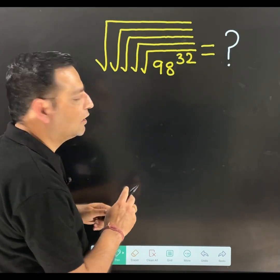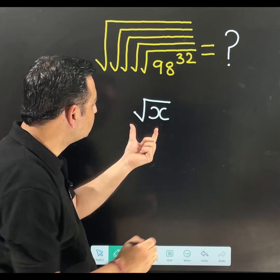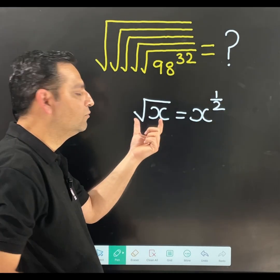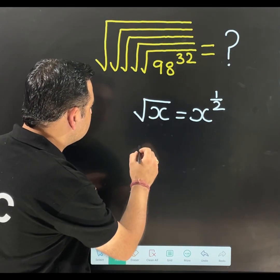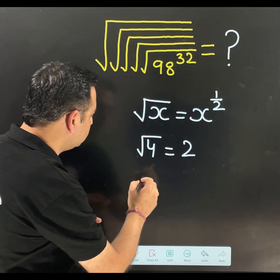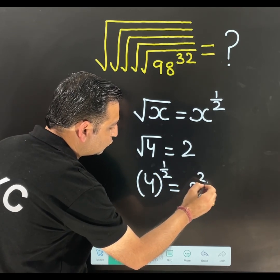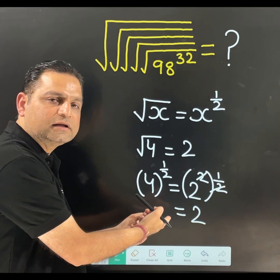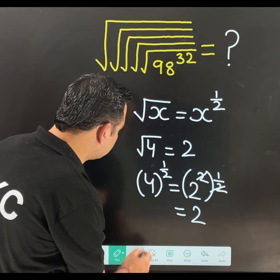First of all I would like to clarify: if you have the square root of x, you should know that this can be written as x to the power 1 over 2. Both are equally the same, there is no difference. For example, the square root of 4 is 2. But 4 to the power 1 over 2 is also the same, because 4 can be written as 2 squared, and the exponent 1 over 2 cancels the square, giving you 2. So both are the same. This concept I am going to use here.